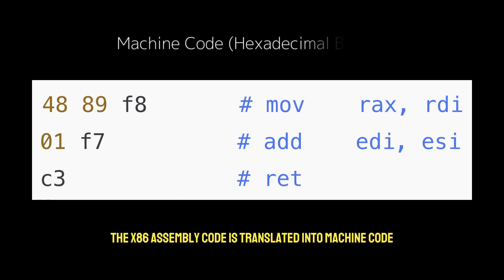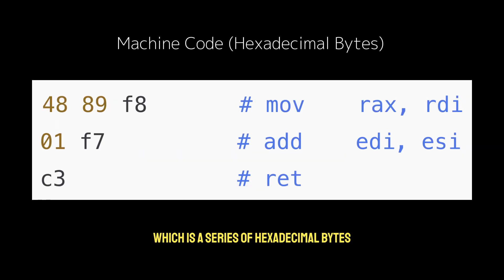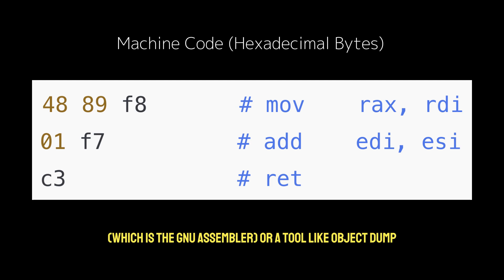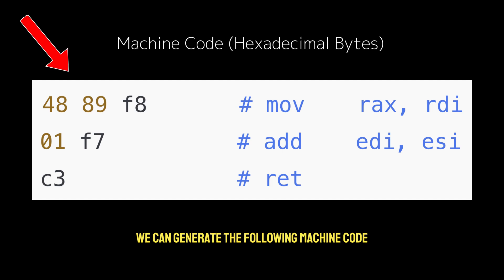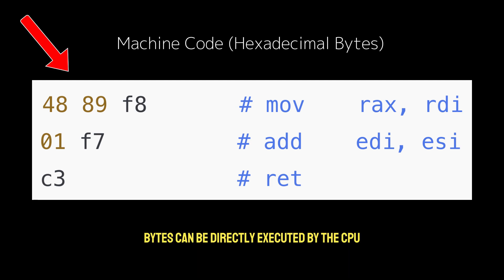The x86 assembly code is then translated into machine code — a series of hexadecimal bytes. Using an assembler like AS (the GNU assembler) or a tool like objdump, we can generate the corresponding machine code, and these hex bytes can be directly executed by the CPU.